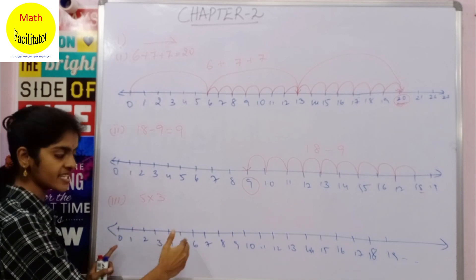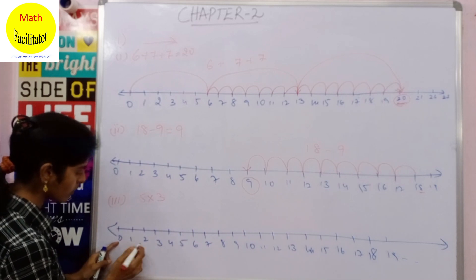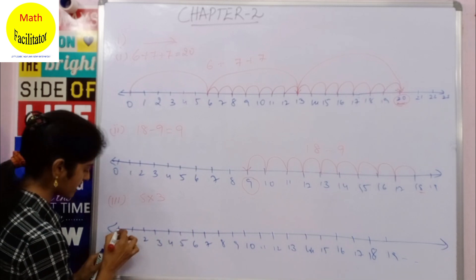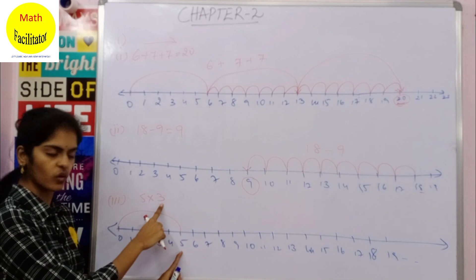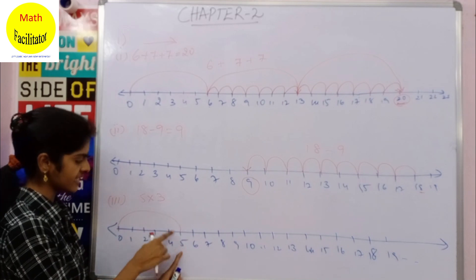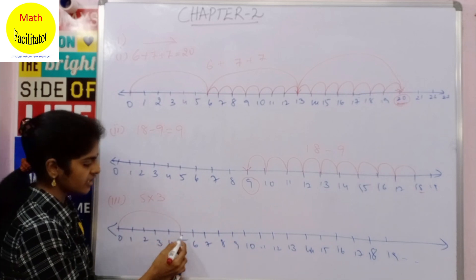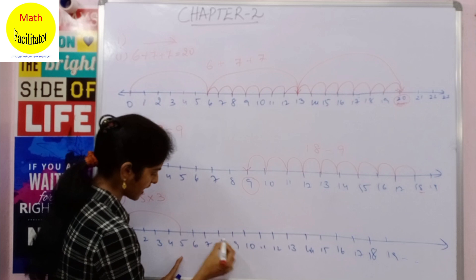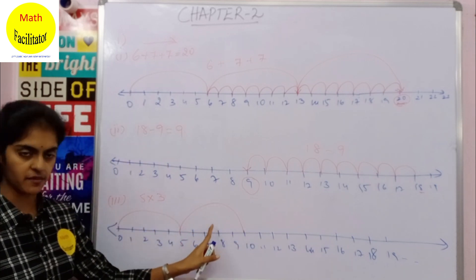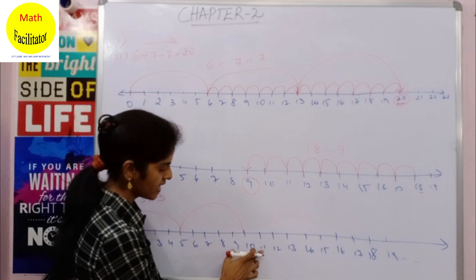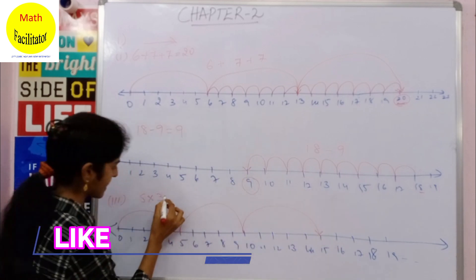The next question is 5 into 3. That means you have to move 5 units and jump 3 times. Starting from 0: 1, 2, 3, 4, 5 — this is the first jump. You will jump 3 times, 5 units at a time. So this is the first 5, now the next 5: 1, 2, 3, 4, 5 — you jump again. That is 2 times you have jumped.